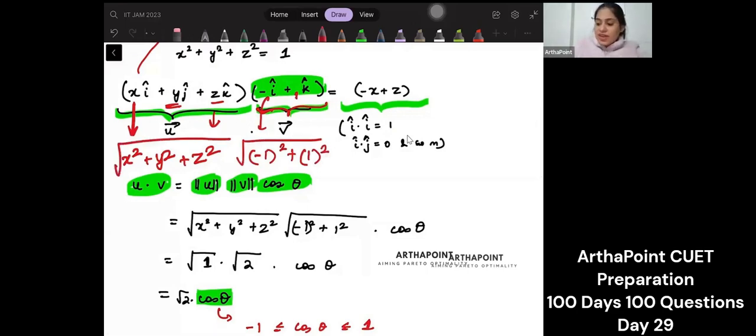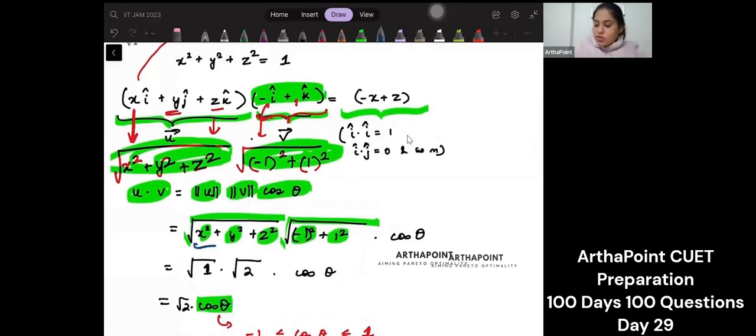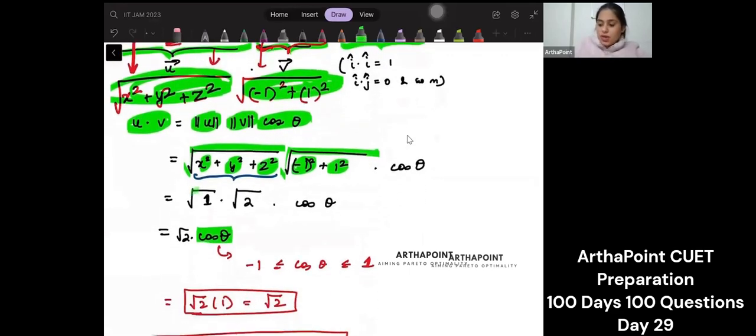So when I find the magnitude of this vector, I will get x square plus y square plus z square under root. And when I find the magnitude of this vector, I will get minus one square plus one square under root into cos theta. But this is given to me in the question that this is one. So I will replace this with root one.